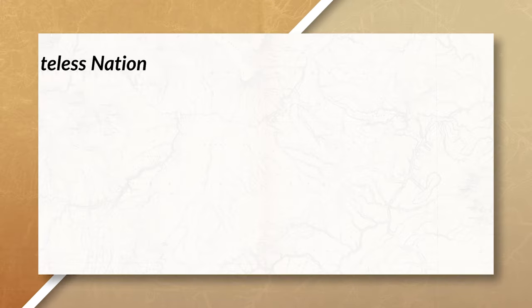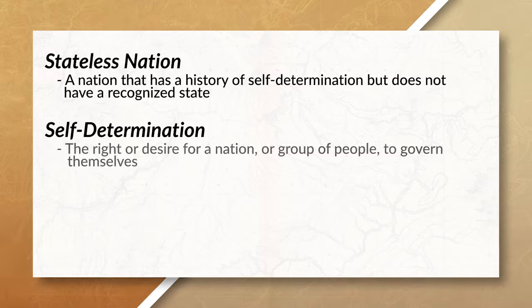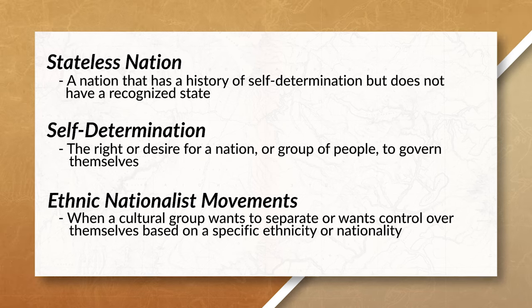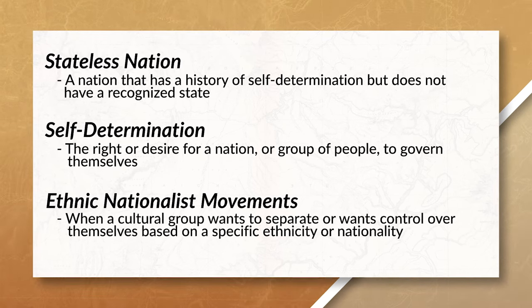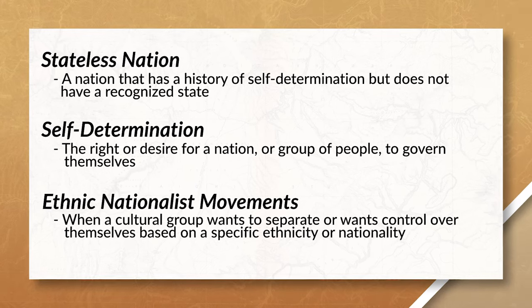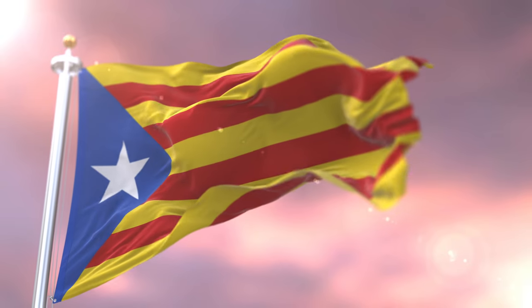Centrifugal forces may also lead to a stateless nation and ethnic nationalist movement. A stateless nation is a nation that has a history of self-determination but does not have a recognized state. Oftentimes stateless nations create pressure on the state to separate. Ethnic nationalist movements are when a specific cultural group wants to separate from the state or wants control over themselves based on a specific ethnicity or nationality — for example, the Catalonians wanting their own state based on their cultural identity.